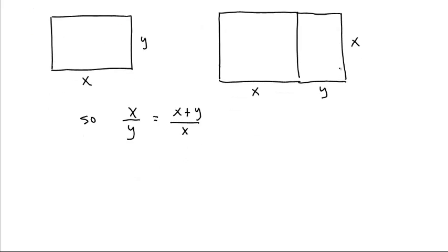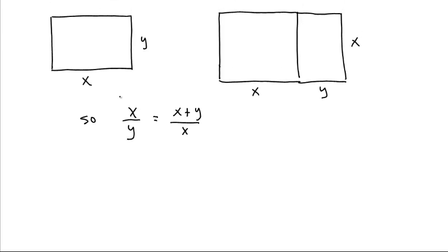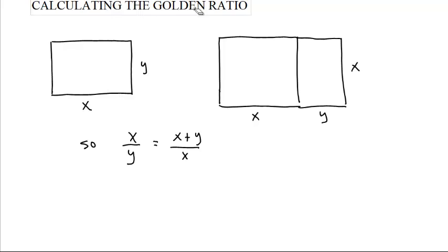Now we want to find out what is this ratio. We can make our rectangle as large or as small as we want. We could make it to the point where the height was 1, where y was 1. And that changes it so that our ratio is x over 1 equals x plus 1 over x.